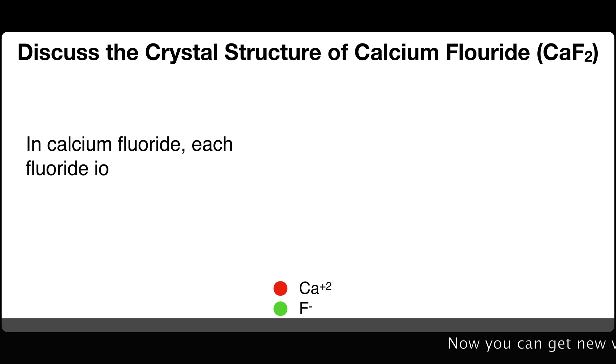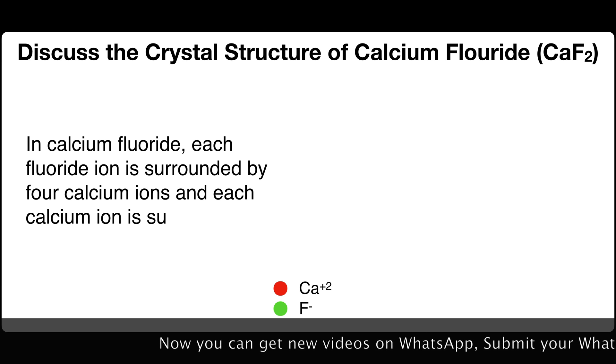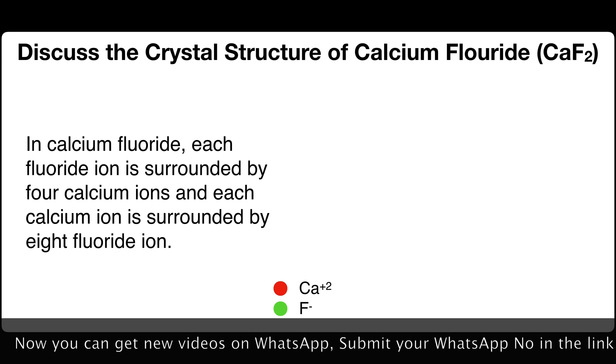In calcium fluoride, each fluoride ion is surrounded by 4 calcium ions and each calcium ion is surrounded by 8 fluoride ions.